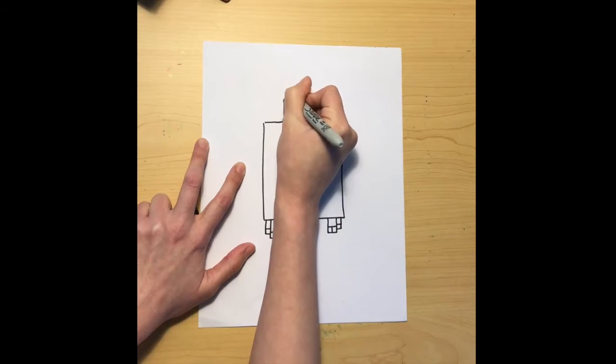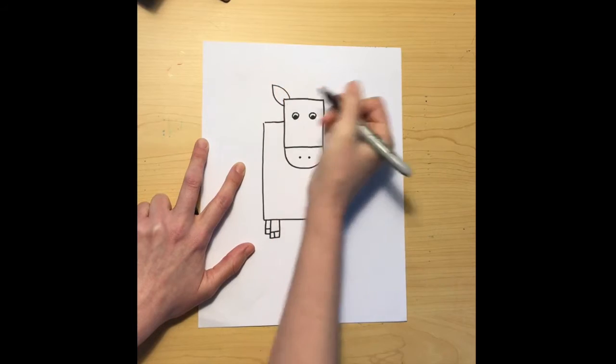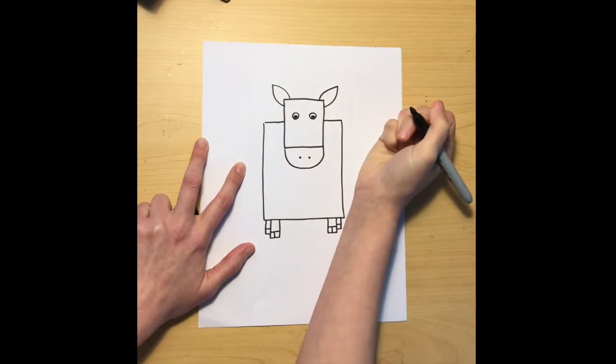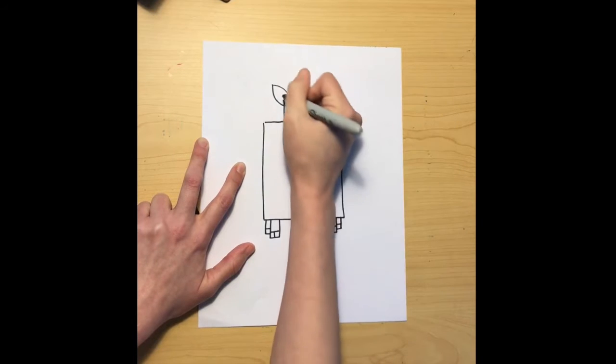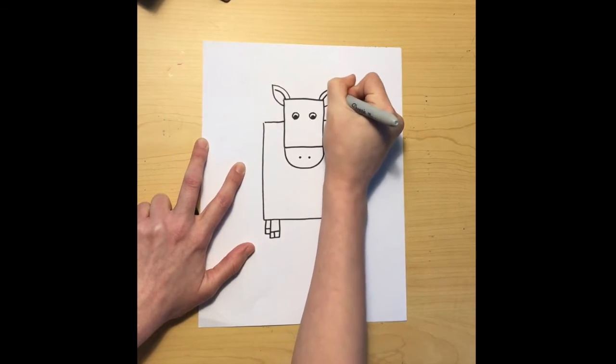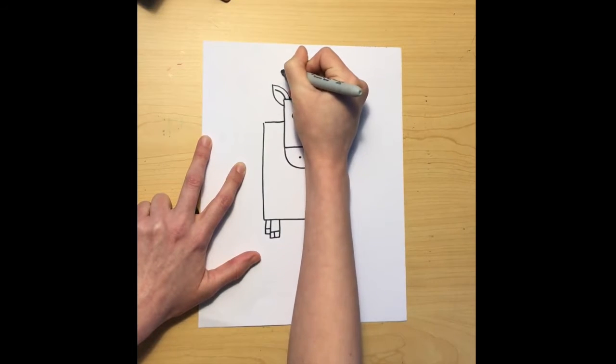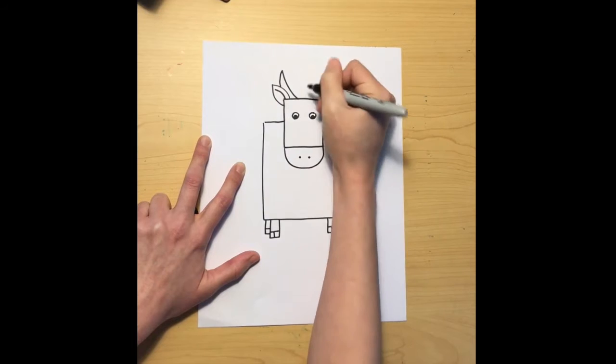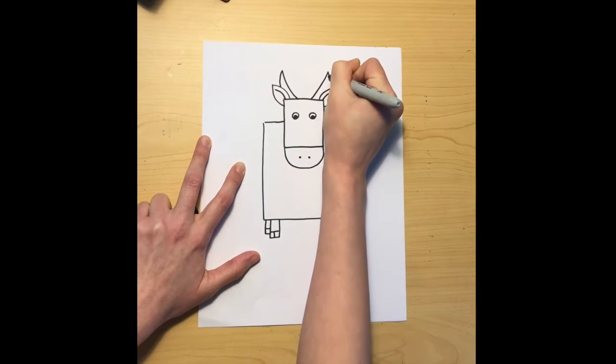Next we're going to do the ears. I'm going to make these cow ears going straight up—two curvy lines and a point on top for the ears. Then I'm just going to add another curvy line inside the ears and then two curvy lines for the horns.